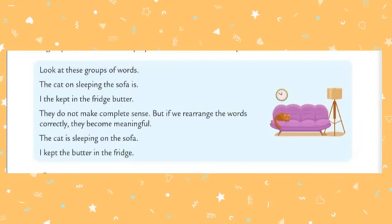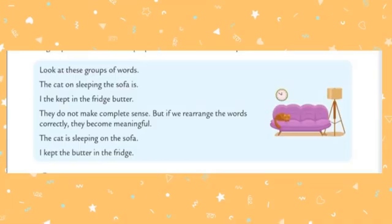Let's arrange the first one: 'The cat is sleeping on the sofa.' Now it became a complete and meaningful sentence because it is giving us information. Let's arrange the second one: 'I kept the butter in the fridge.' In the second statement also, we arranged the words in proper order and it gives clear information.